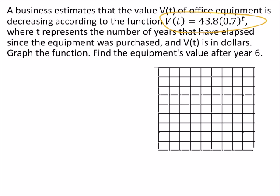A business estimates the value V(t) of office equipment is decreasing according to this function. Where t represents the number of years that have elapsed since the equipment was purchased and V(t) is in dollars. Graph the function. Find the equipment's value after year 6.